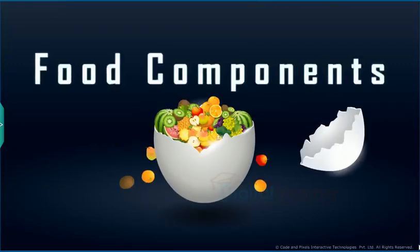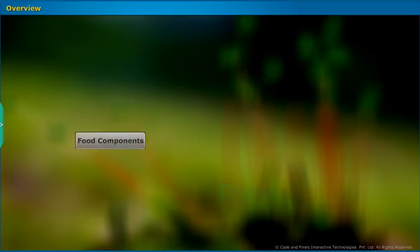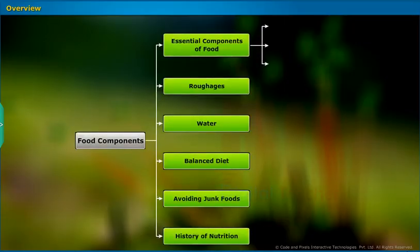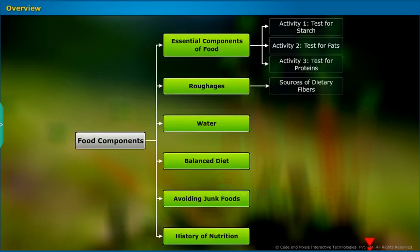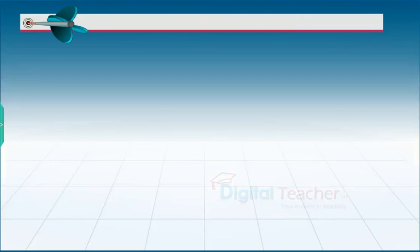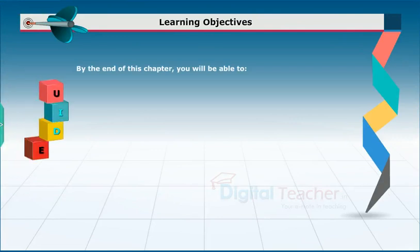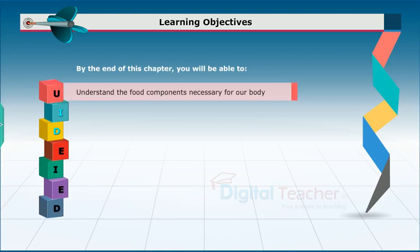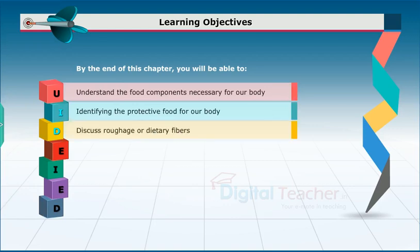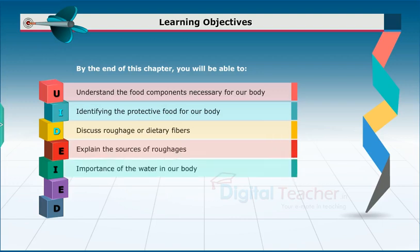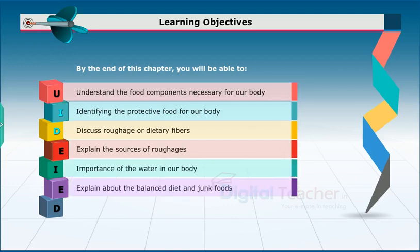Welcome to the chapter Food Components. This slide presents the overview of the chapter. By the end of this chapter, you will be able to: understand the food components necessary for our body, identify the protective food for our body, discuss roughages or dietary fibers, explain the sources of roughages, the importance of water in our body, explain about the balanced diet and junk foods, and discuss the history of food and nutrition.